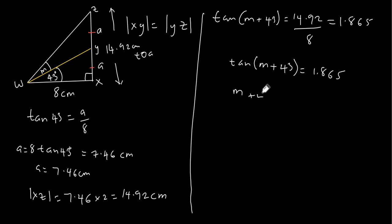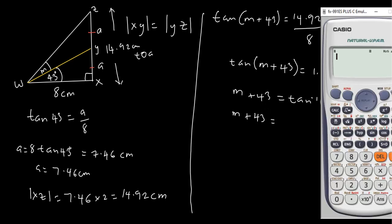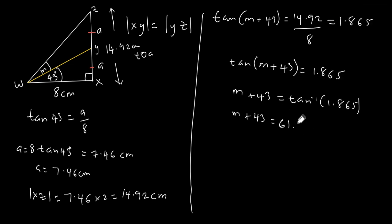Now let's find the value of m by taking the tan inverse, so we have m plus 43 is equal to the tan inverse of 1.865. m plus 43 is equal to the tan inverse of 1.865, which is equal to 61.8 degrees.